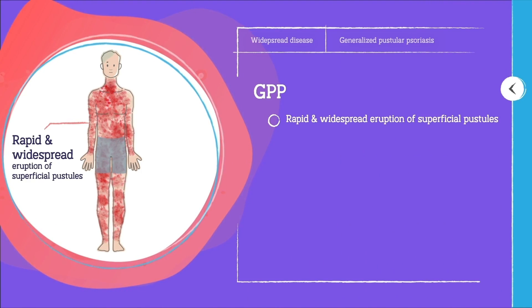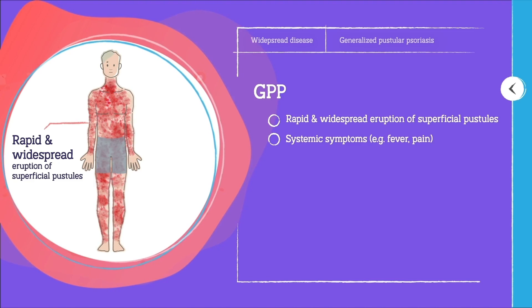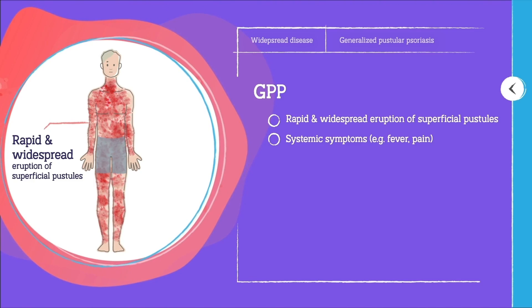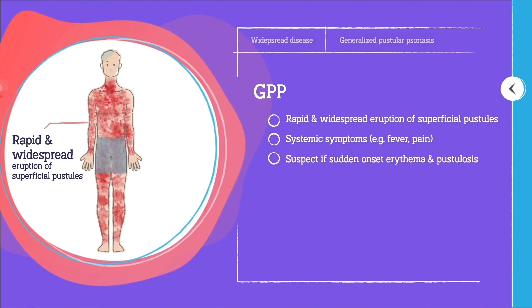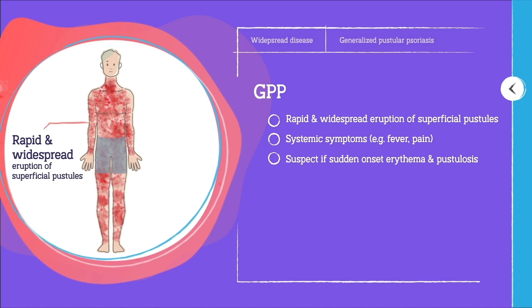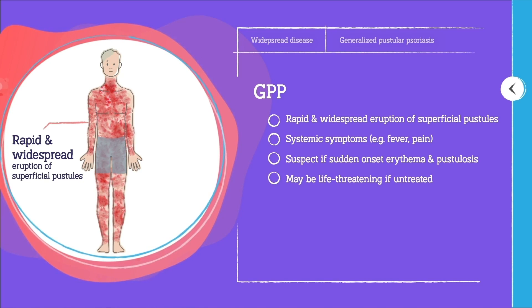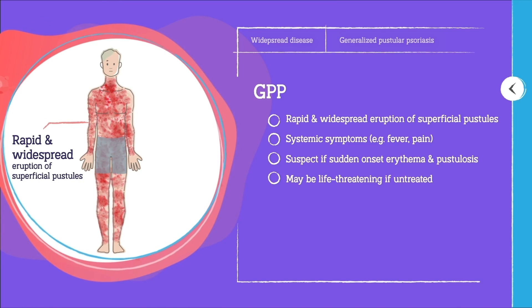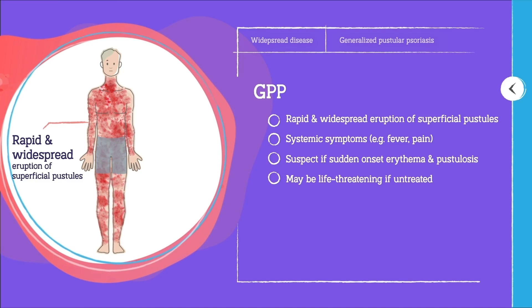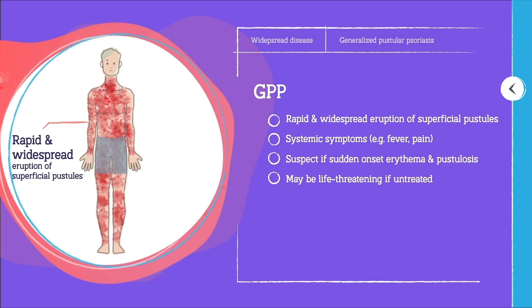A GPP flare is characterized by the rapid and widespread eruption of superficial pustules, usually affecting skin on the trunk and limbs. Systemic symptoms are also common, particularly fever and pain from skin lesions. GPP should be suspected in any individual with sudden onset of erythema and pustulosis.